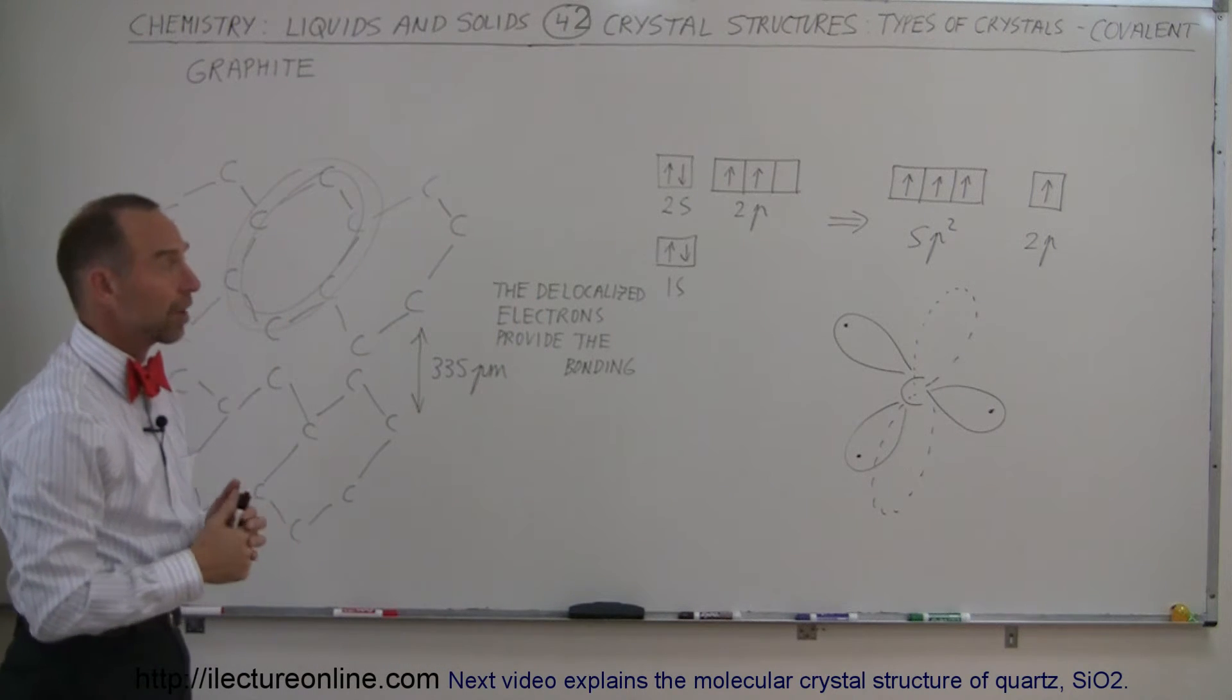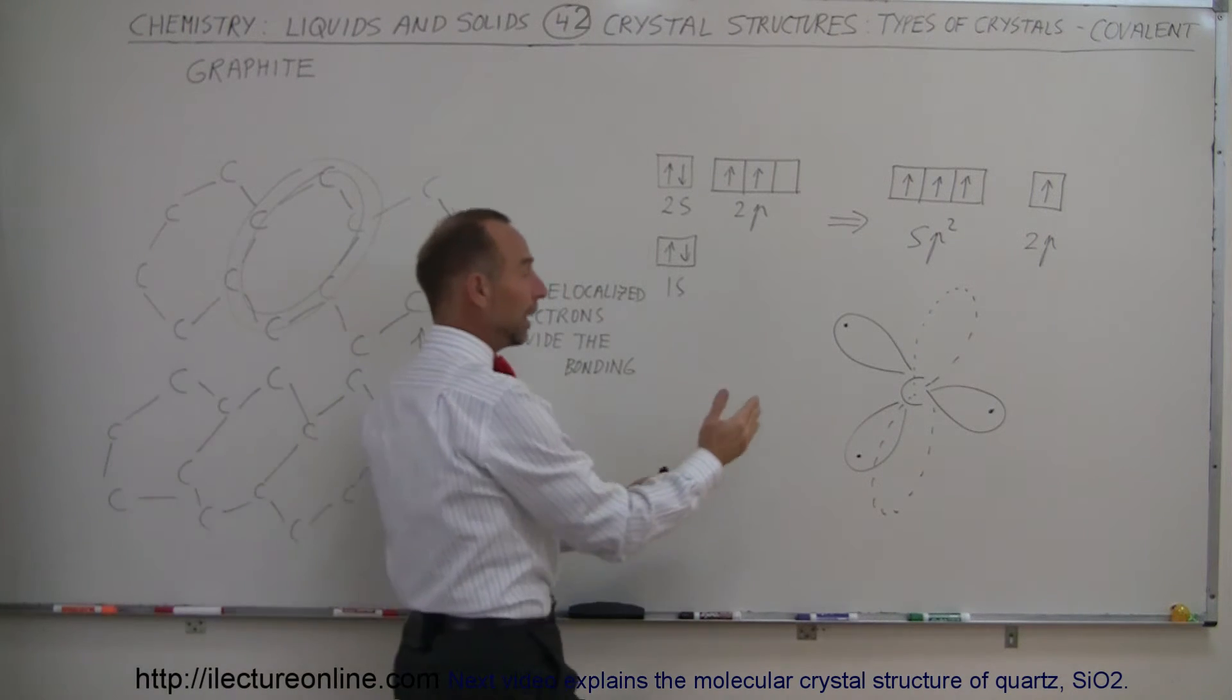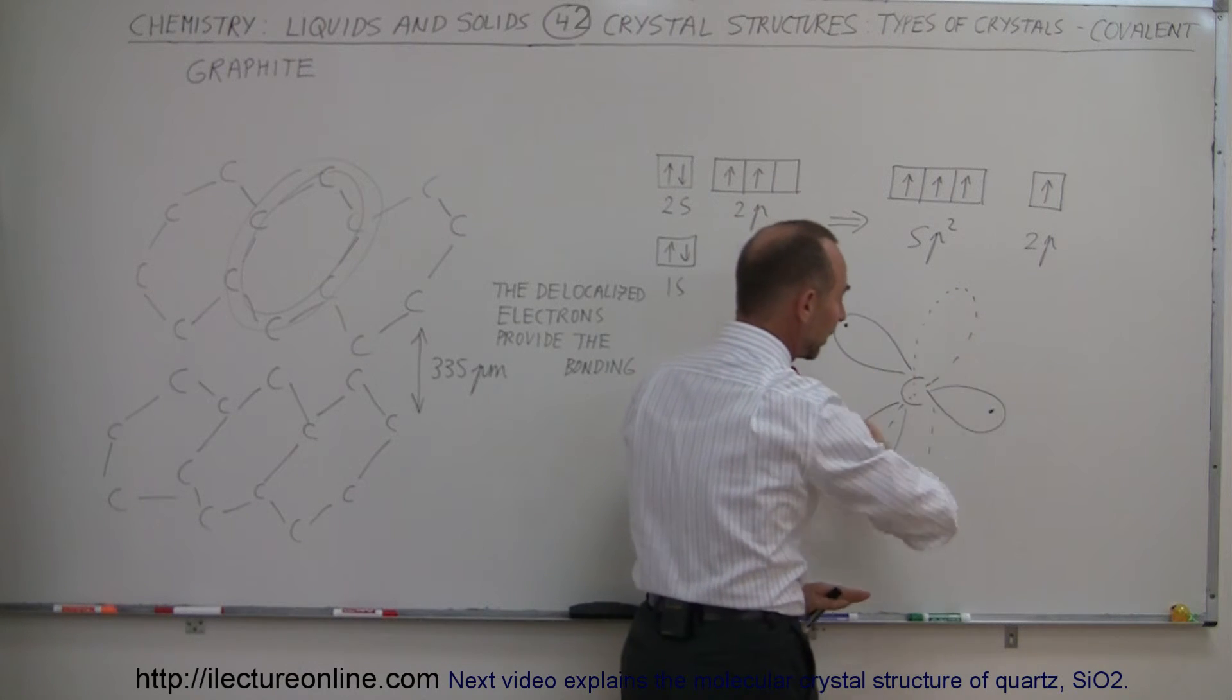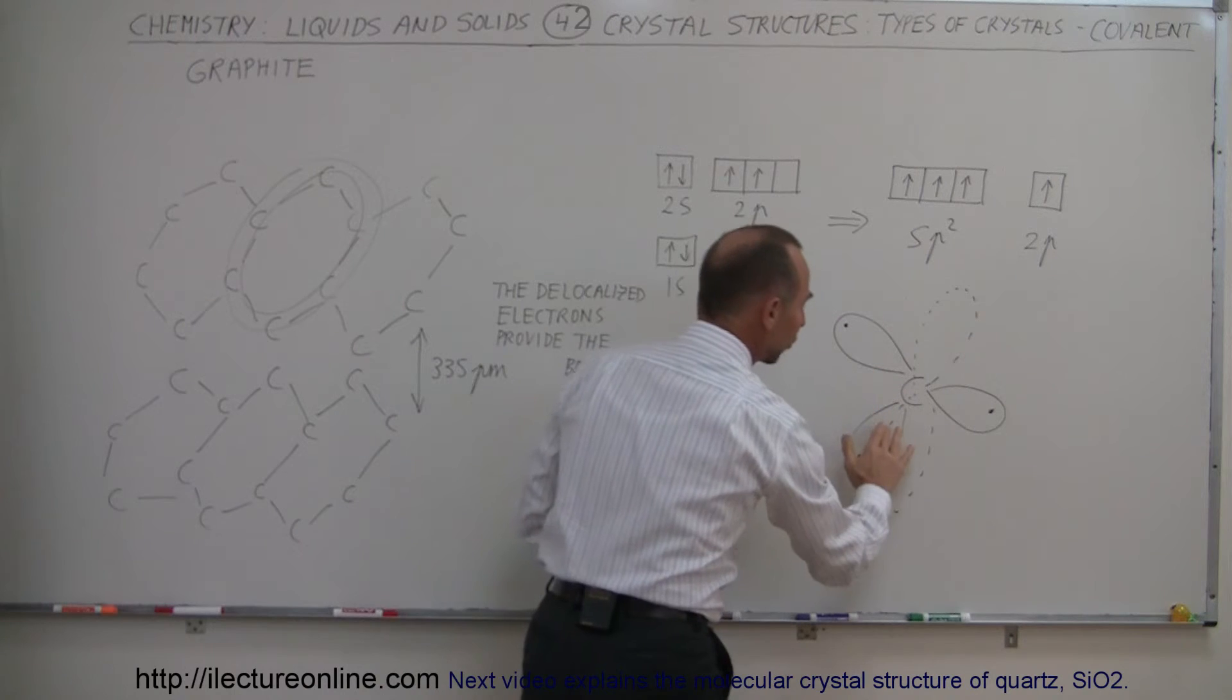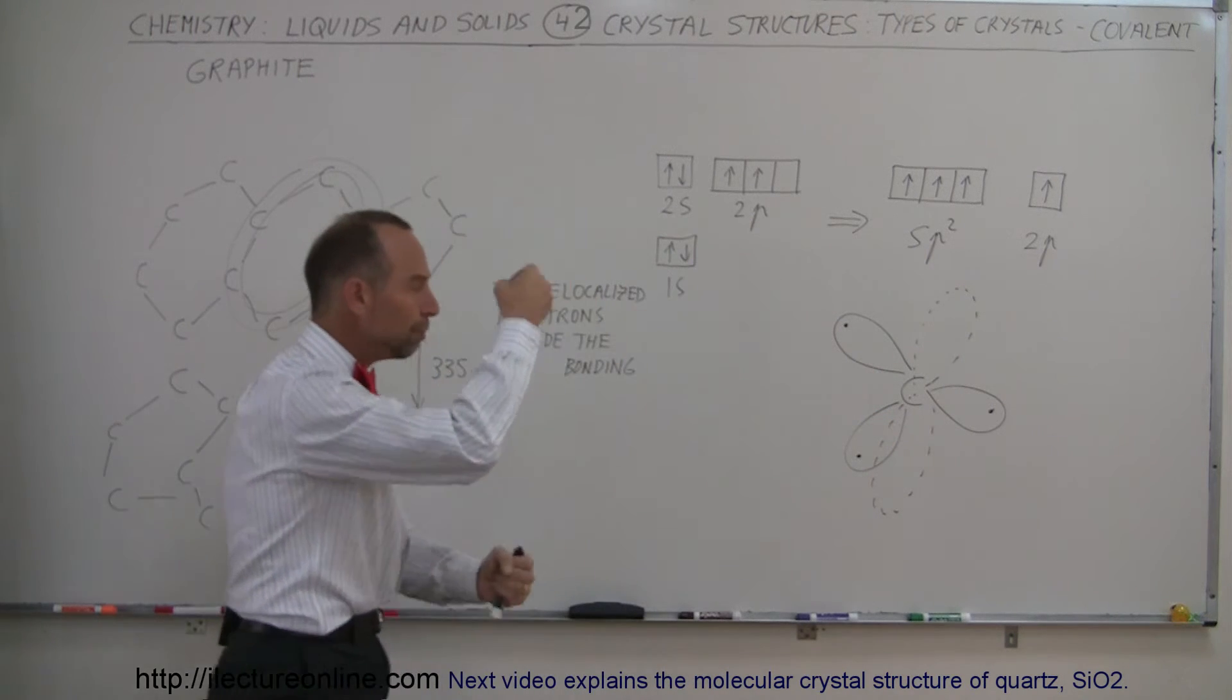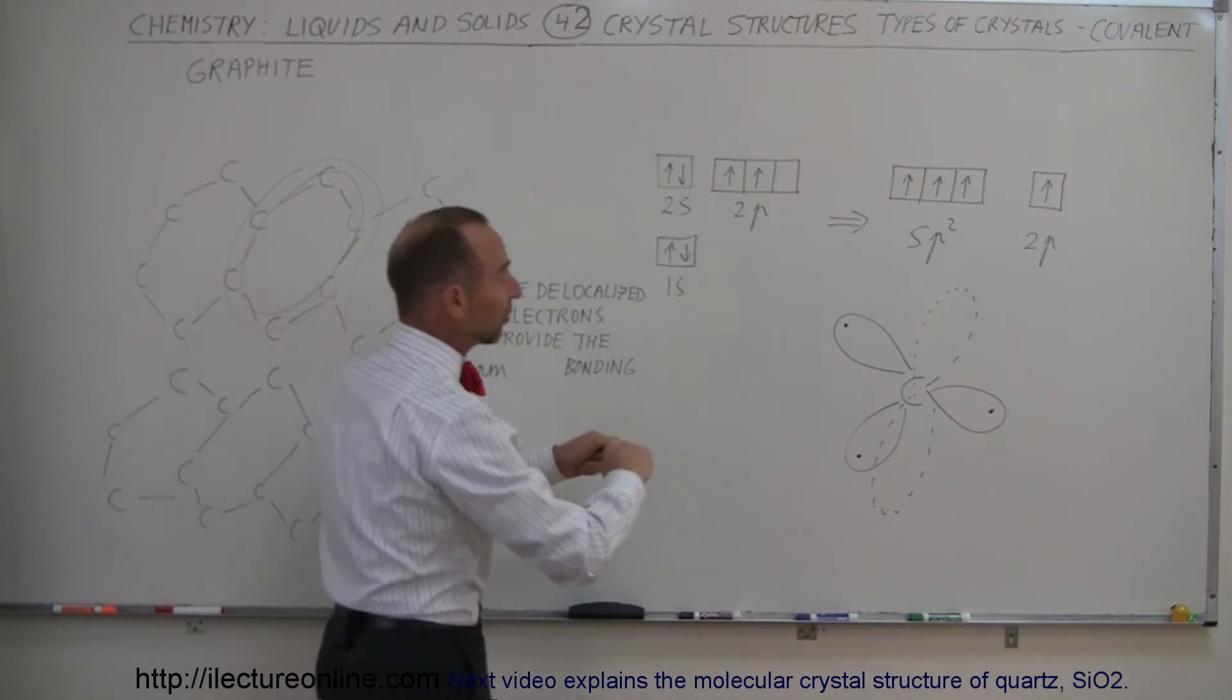What happens to the fourth electron? Well it stays in the 2p orbital and it will be directed perpendicular from the flat or planar direction of these three hybridized orbitals.